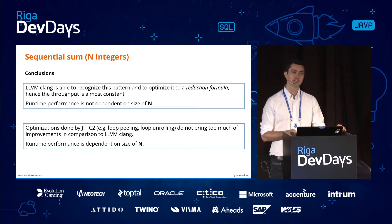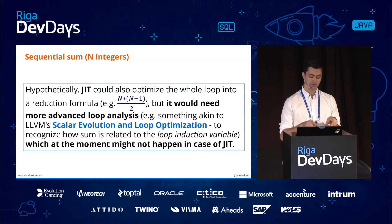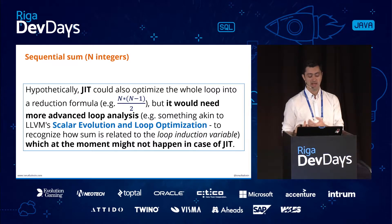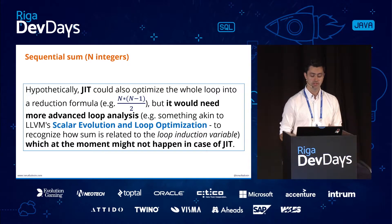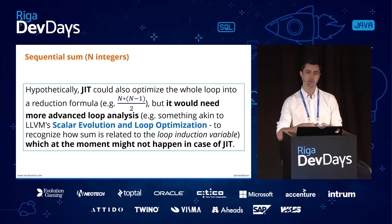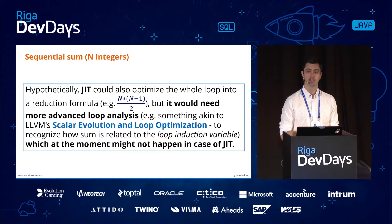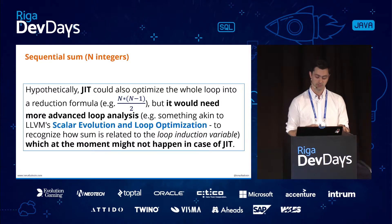Why can't JIT C2 apply this optimization? I posted the question to OpenJDK developers and they replied that hypothetically C2 could do it, but it would need more advanced loop analysis. The optimization in LLVM is called scalar evolution and loop optimization, which is currently missing from C2. It will probably be added sometime in Graal, but I don't think C2 will be enhanced for this optimization.